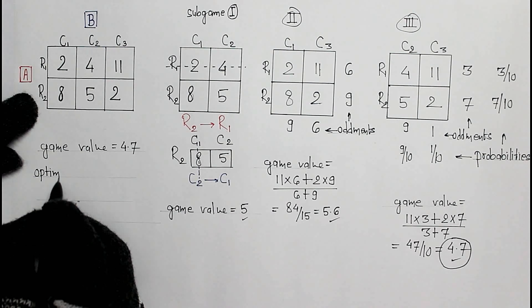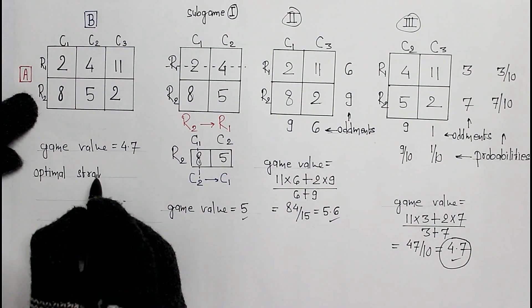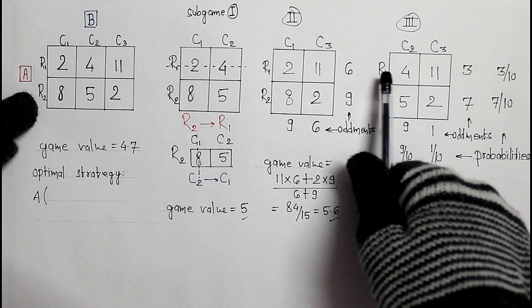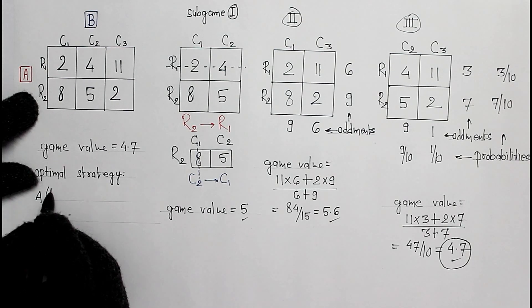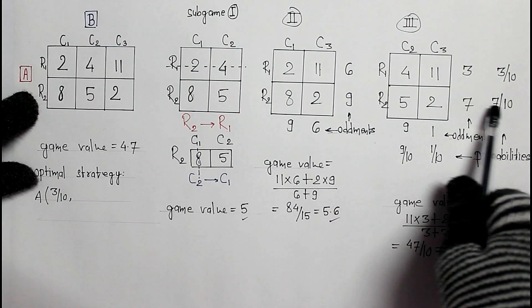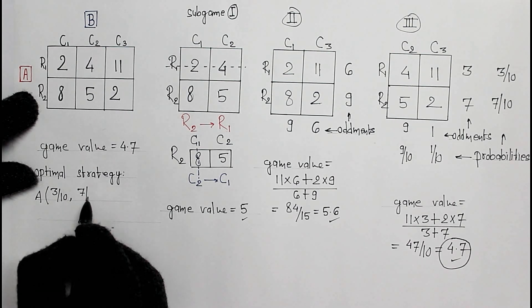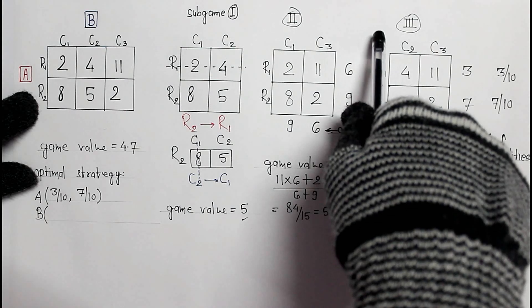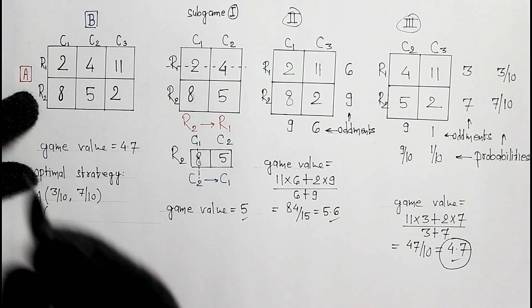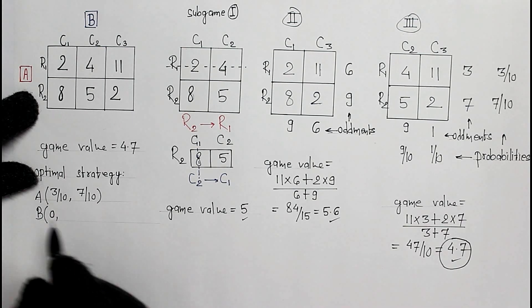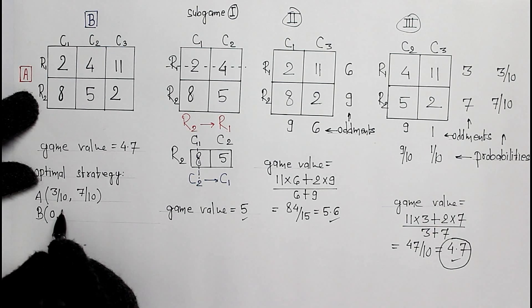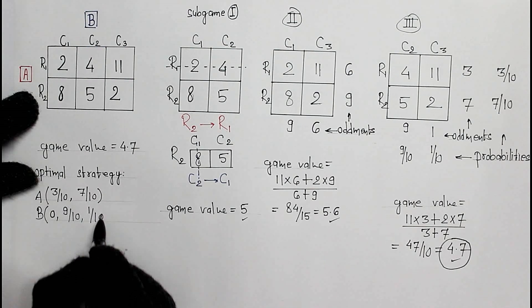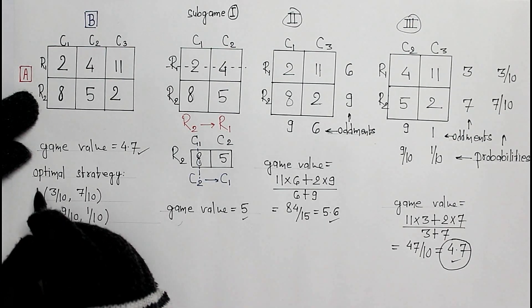Now optimal strategies. For player A: first row R1 has probability 3 by 10, and for the second row R2, probability is 7 by 10. For player B: in this sub game C1 is cancelled, so C1 has 0 probability. For C2, probability is 9 by 10. And for C3, probability is 1 by 10. The game value is 4.7.